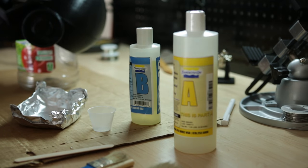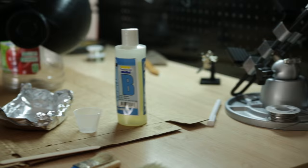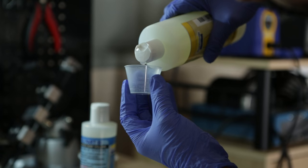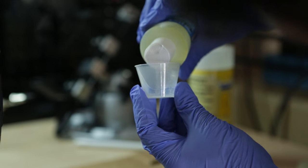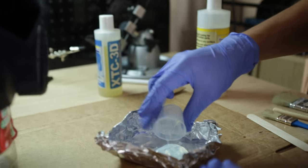Next up we're going to use XTC 3D coating to fill in the gaps. It's a two-part epoxy so be sure to measure the ratio correctly. To extend the work time of the resin you can pour it into a tray made from aluminum foil.